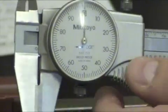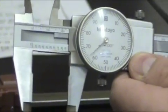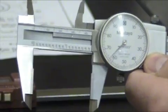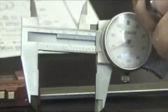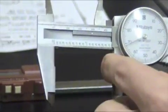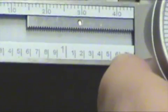For example, if we just happen to open up the jaws, lock it. If you read it, it says it's past the one inch, but not to the two. So, we know this is one inch.